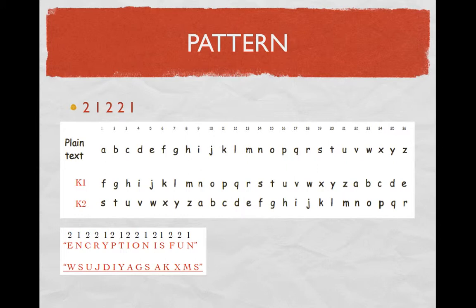You take your message, and with the first letter according to your pattern, you use the second block first. You see the letter E in your plain text — since that's the first letter in your message — and look for the corresponding letter in the second cipher block, which is the letter W. Then you do the next letter, which is N. You look for the letter N in the plain text, and since the next number in pattern is 1, you take the corresponding letter to the first cipher block, which is S. You follow this pattern, and once you reach the end of your pattern, you start over. The length of the pattern increases security, so the longer the better. You repeat this until you complete the encrypted message.